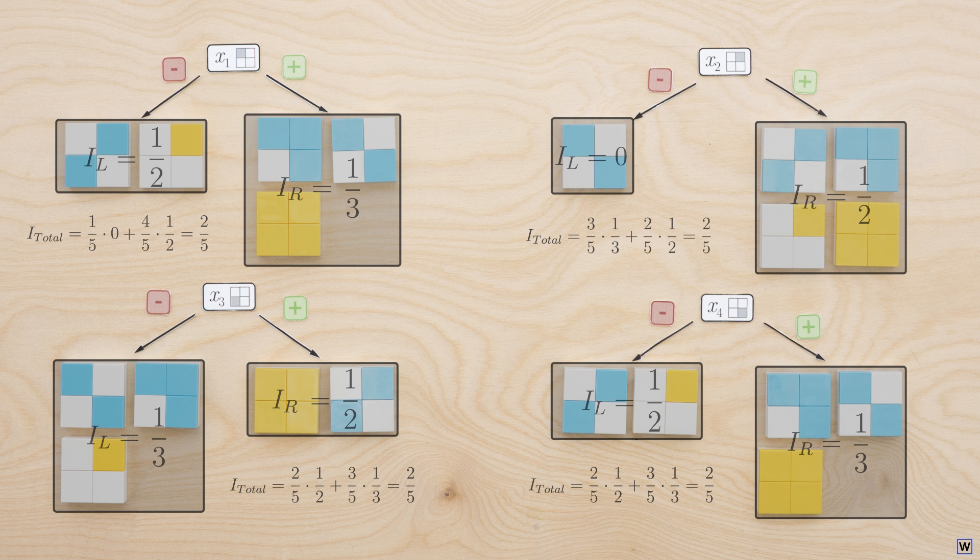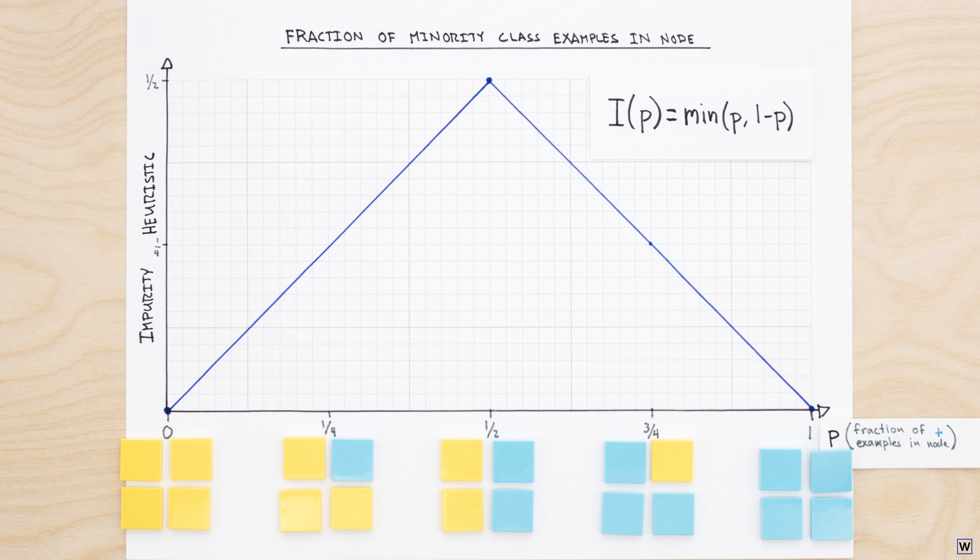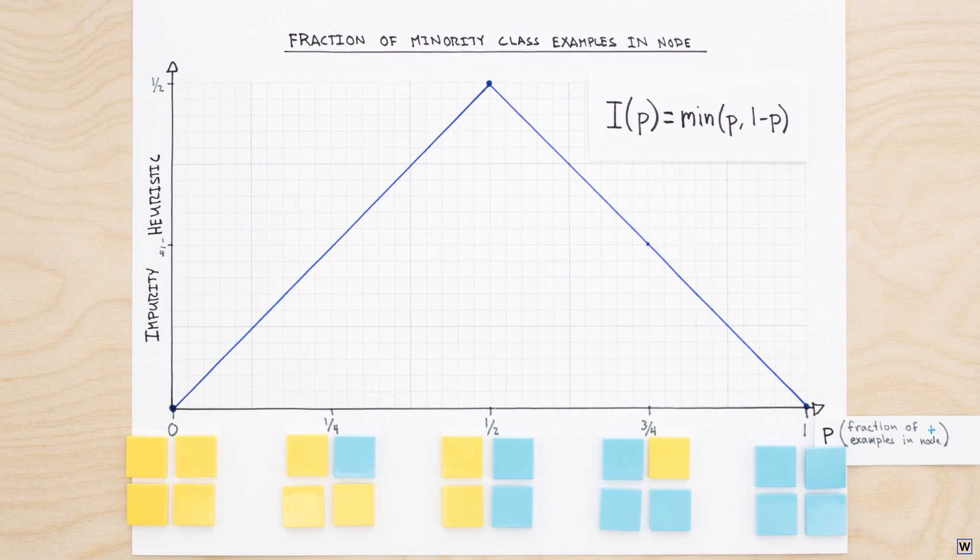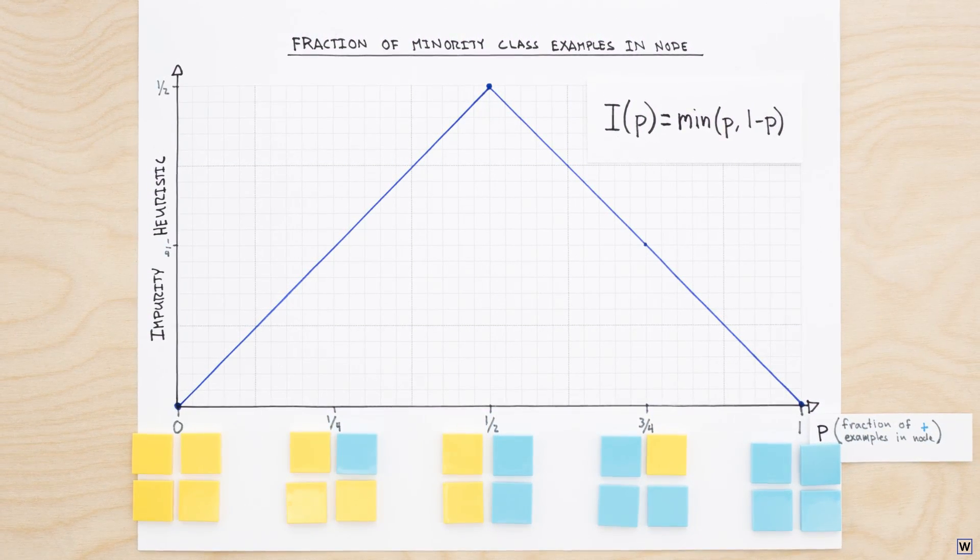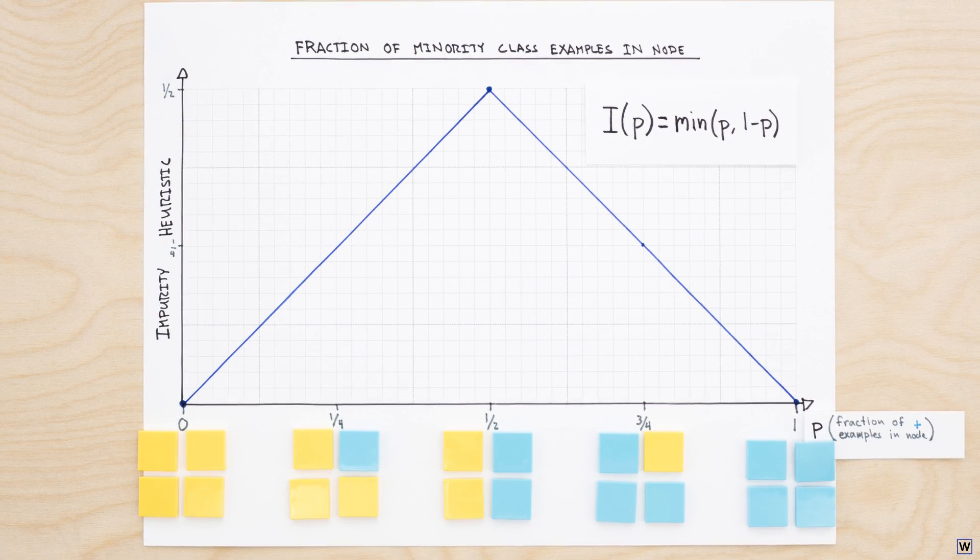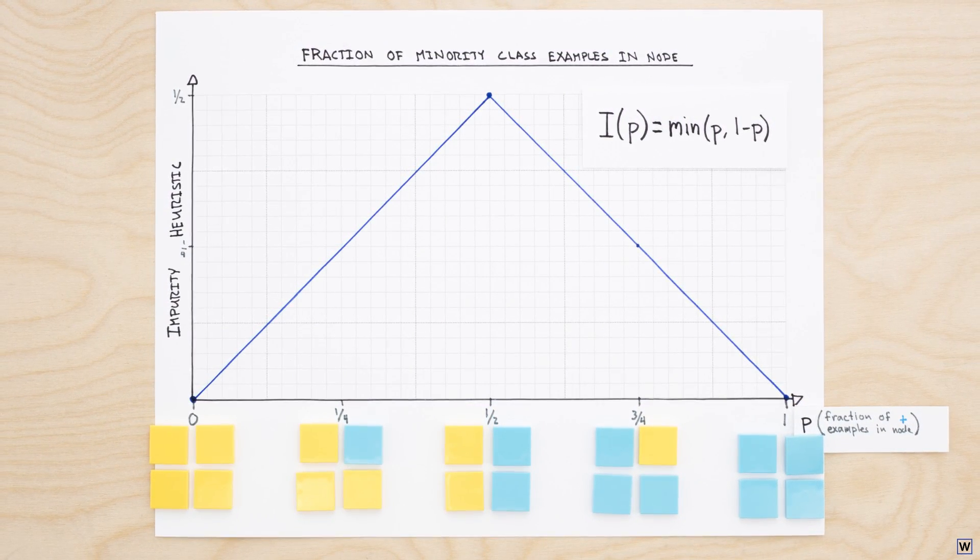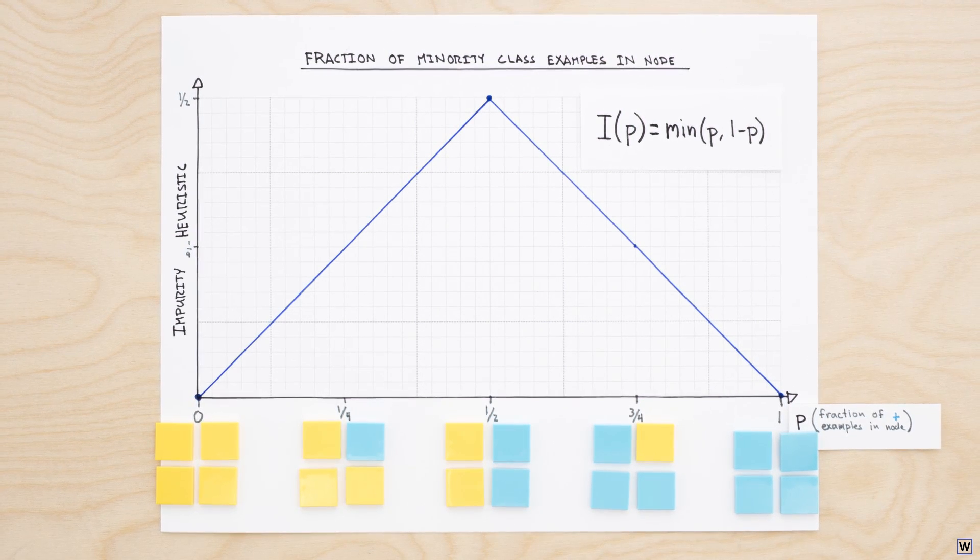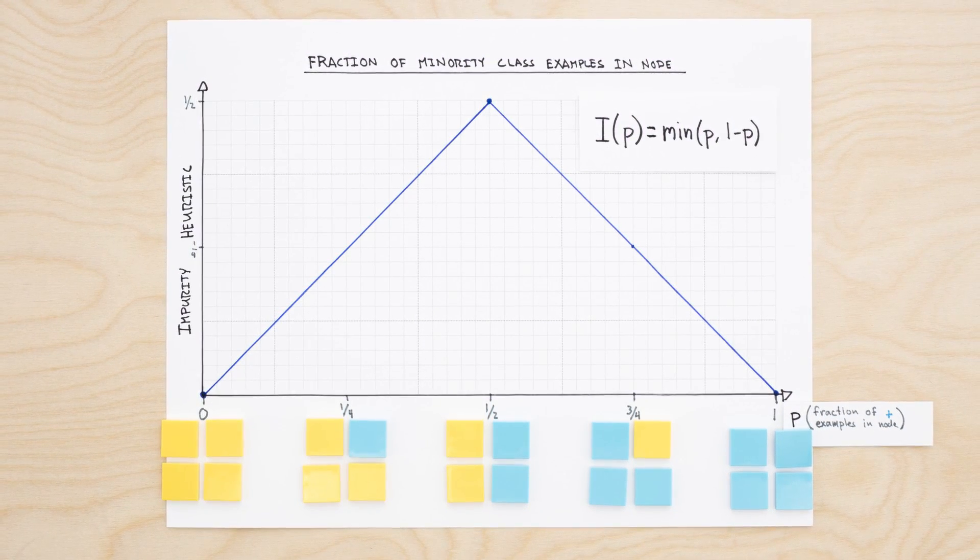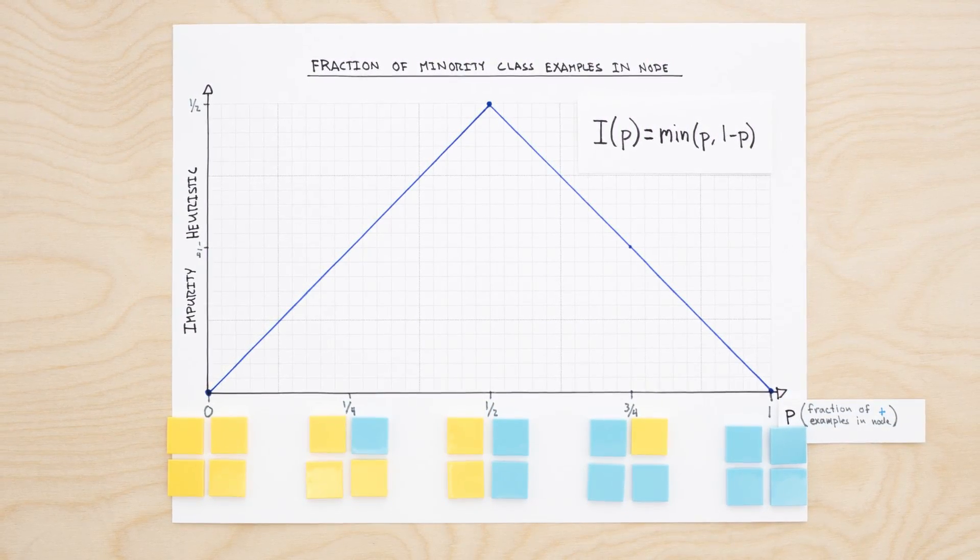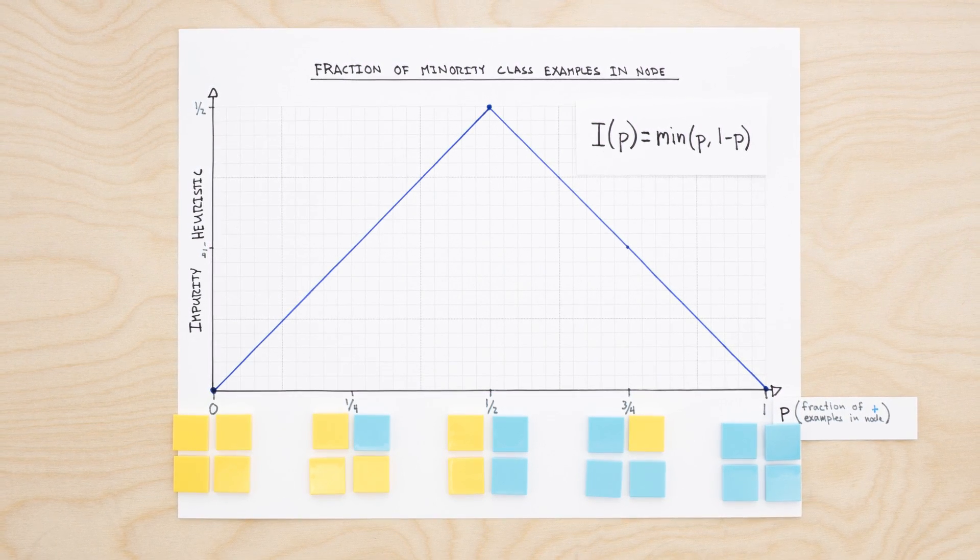It turns out that we're missing one final key piece of the puzzle. There's one critical change we need to make to our node impurity heuristic that will make all the difference. And of all the ideas we've picked up from our machine learning and statistics researchers, this one is the most subtle, but also the most powerful. Although implemented in different ways in the statistics and machine learning communities, this minor change to our heuristic was the key discovery that allowed decision trees to quickly and effectively learn patterns from data.